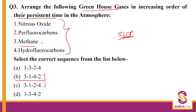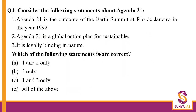Now, a quick question I have — we have already covered this in the crash course. Tell me what are the top three country-wise emitters of greenhouse gases. You can type that in the comment section — top three emitters of greenhouse gases globally.